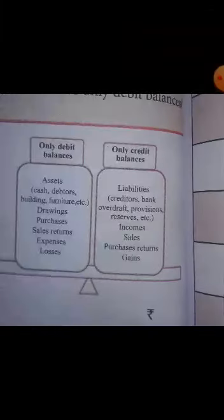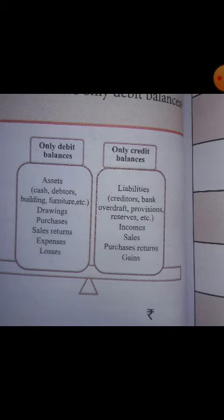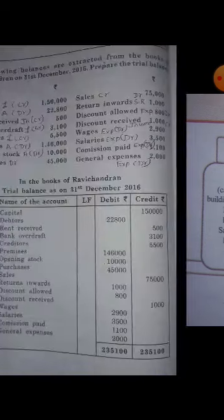Certain accounts will always show only a debit balance and some accounts always show a credit balance. If you get thorough with which items come on the debit side and which show the credit balance, you can easily do the sums without any mistakes.